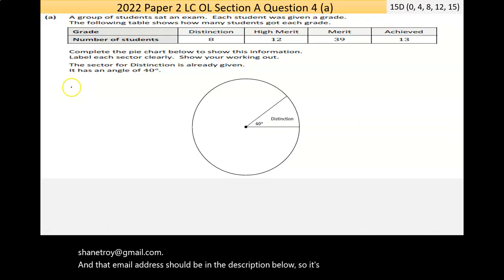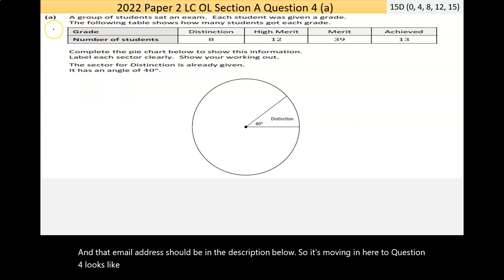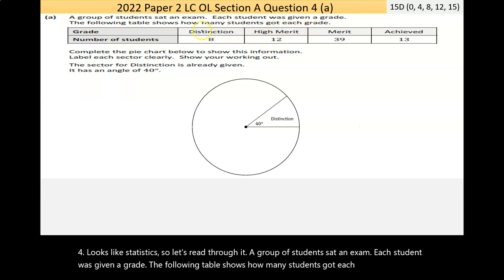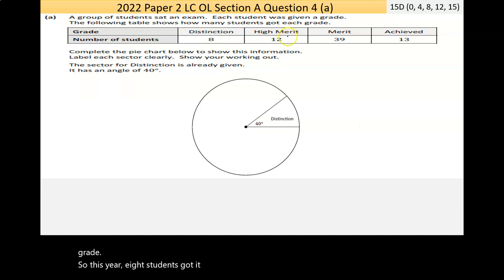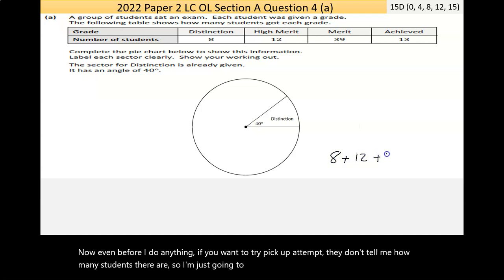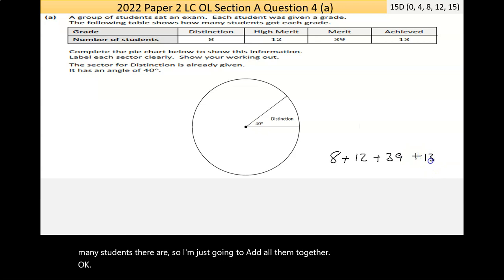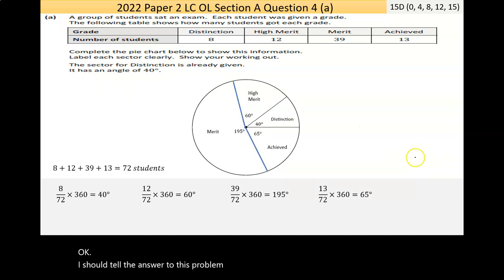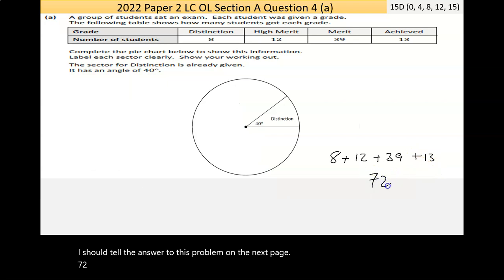Moving into question four, it looks like statistics. A group of students sat an exam, each student was given a grade. The table shows how many students got each grade: 8 students got distinction, 12 got high merit, 39 got merit, and 13 got achieved. Before I do anything, they don't tell me how many students there are, so I'm going to add them all together. That gives 72 students.